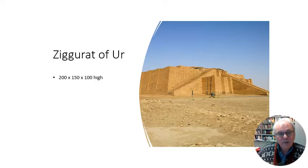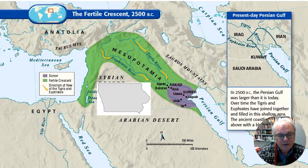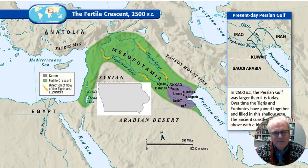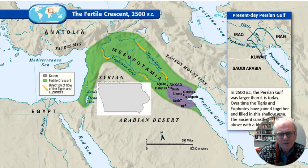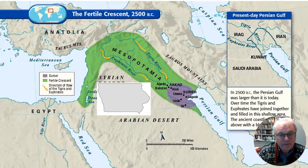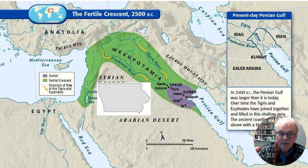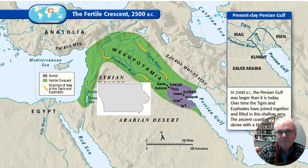That ziggurat would be located where tradition and scripture say Abraham was born and began his life. Abraham went from Ur up north to the land of Haran, then made his way down to the Promised Land. To give a sense of the scope, I placed Iowa within the Fertile Crescent to scale. Starting in Ur is like starting near Peoria, traveling up to Haran — like going up to Bemidji, Minnesota — and then walking all the way down to about Lincoln, Nebraska.